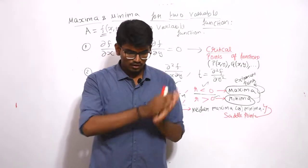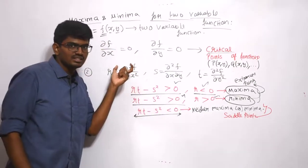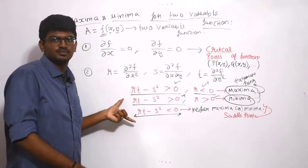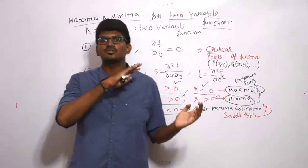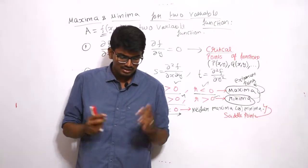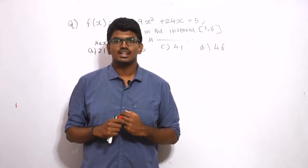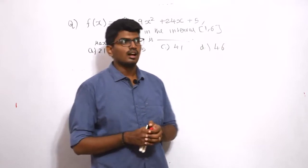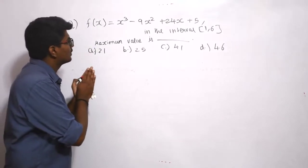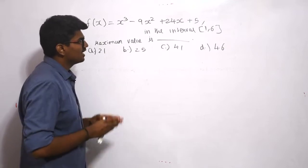This is almost similar to a single variable function, but here we do partial differentiation and the steps to determine maxima or minima differ. We will see an example for a single variable function: f(x) = x³ - 9x² + 24x + 5 in the interval [1, 6].